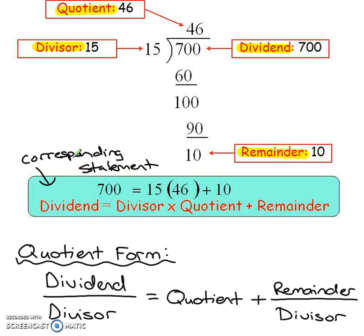So corresponding statement, to me, is the most logical. The dividend, the 700, is equal to the divisor and the quotient multiplying each other. Then that might get you really close to 700, but then you might need to add the remainder to get the rest of the way to get to 700. So then you're going to add your remainder at the very end. This is how the corresponding statement is written.